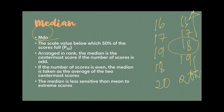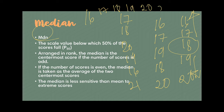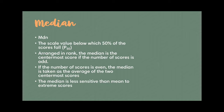If it's an even-numbered sample — for example, seventeen, eighteen, twenty, nineteen, sixteen, twenty-one — arranged as sixteen, seventeen, eighteen, nineteen, twenty, twenty-one — you get the two middle-most values and take the mean. So your median is eighteen point five. The best property of the median is that when you identify it, you know that half of the sample is below the median and half of the sample is above the median.